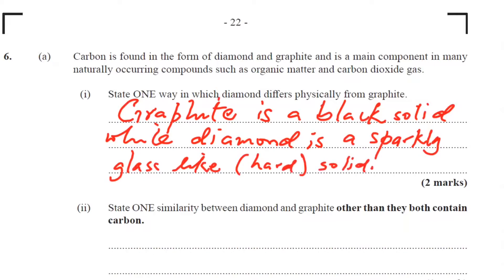So it's not just the appearance, but graphite is a black solid while diamond is a sparkly glass-like hard solid. Part two: state one similarity between diamond and graphite, other than that they both contain carbon.